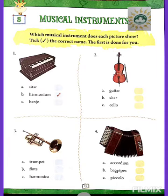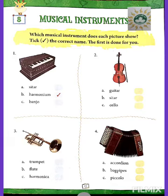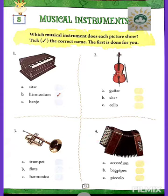Number three is the trumpet. It is generally played in the orchestra. The fourth one is accordion — it's almost like a harmonium, but they put it on their shoulder and hang it in front of their chest and play it.